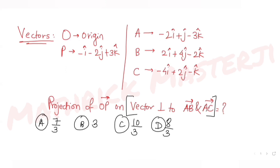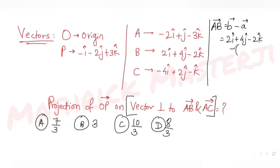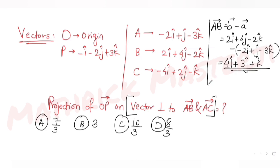The second vector is perpendicular to AB and AC. Let's find AB first. AB equals B minus A: B is 2i plus 4j minus 2k, minus A which is minus 2i plus j minus 3k. This gives 2i plus 2i equals 4i, 4j minus j equals 3j, and minus 2k plus 3k equals k. So AB is 4i plus 3j plus k.